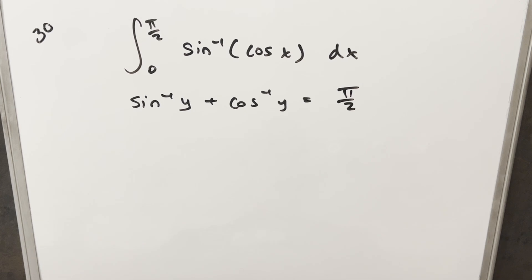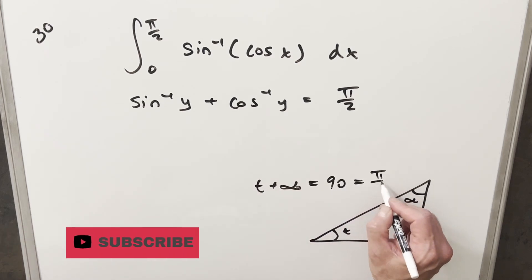The intuition on this is if you just look at our right triangle, we've got a 90 degree angle here. The sum of the angles of a triangle need to equal 180 degrees. So if this angle is 90, then we know that θ plus α is just going to be 90 as well, which we can express as π/2.